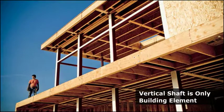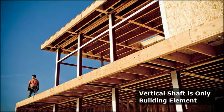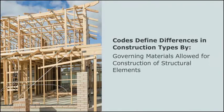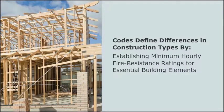Some of these elements are covered in the construction type chapters of the codes, and these requirements will be explained in this course. Additional elements are discussed in other sections of the codes. The codes define the differences in construction types by governing the kinds of materials allowed for construction of each structural element and by establishing minimum hourly fire resistance ratings for each essential building element.